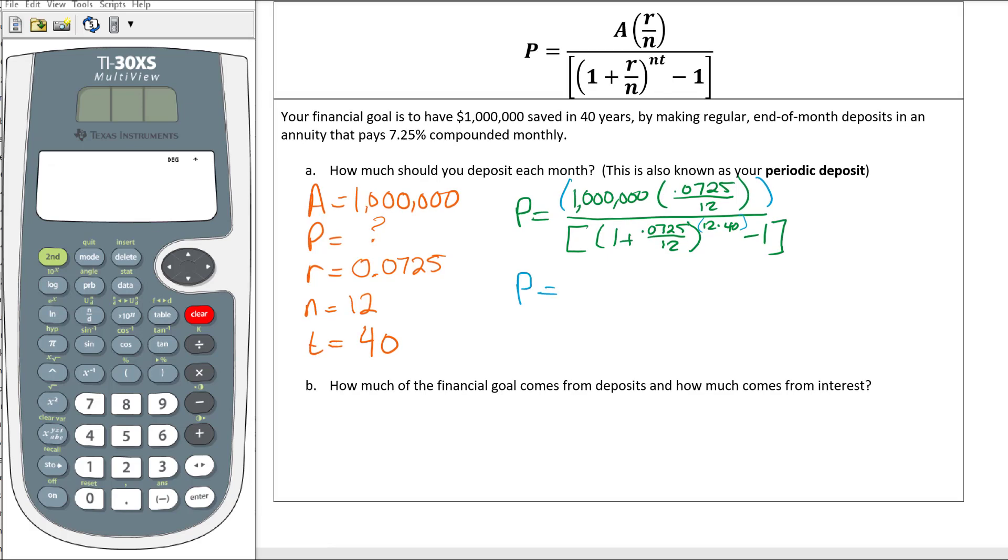We're going to type this in the calculator: parentheses 1 million, make sure you have six zeros there, 1, 2, 3, 4, 5, 6, then open another parentheses 0.0725 divided by 12, close your parentheses.